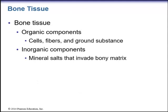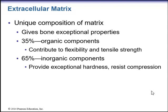Bone tissue has both organic and inorganic components. Organic components include cells, fibers, and ground substance. Inorganic components include mineral salts that invade the bony matrix. About 35% of the extracellular matrix is organic, contributing to flexibility and tensile strength, while 65% is inorganic, providing exceptional hardness and resistance to compressive forces.